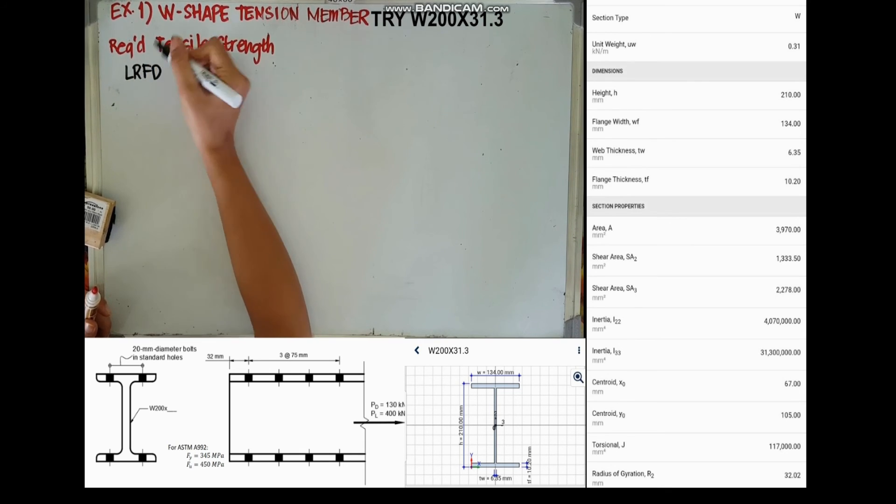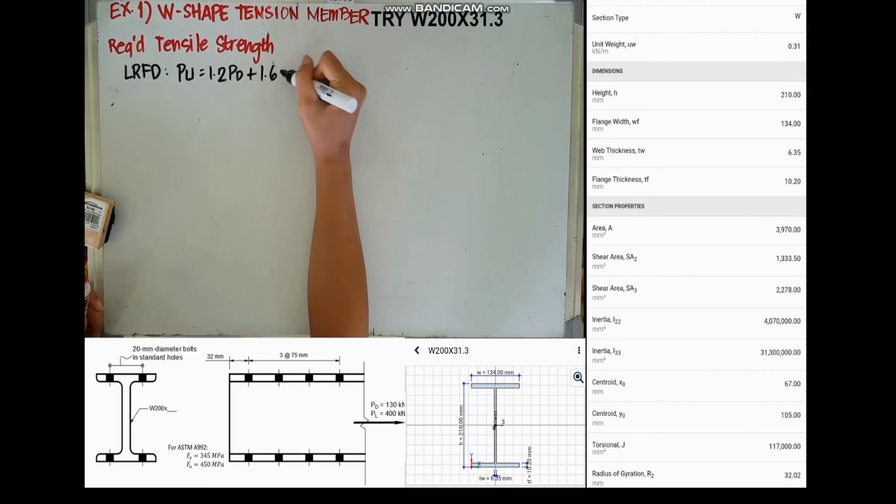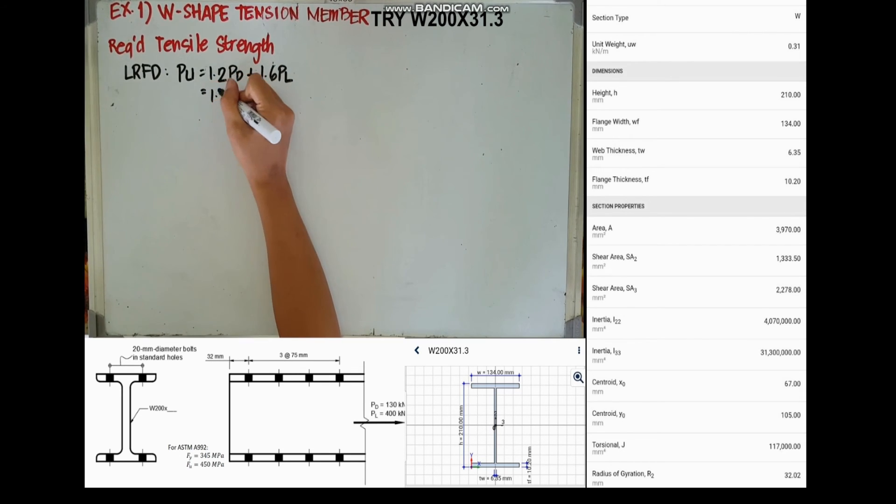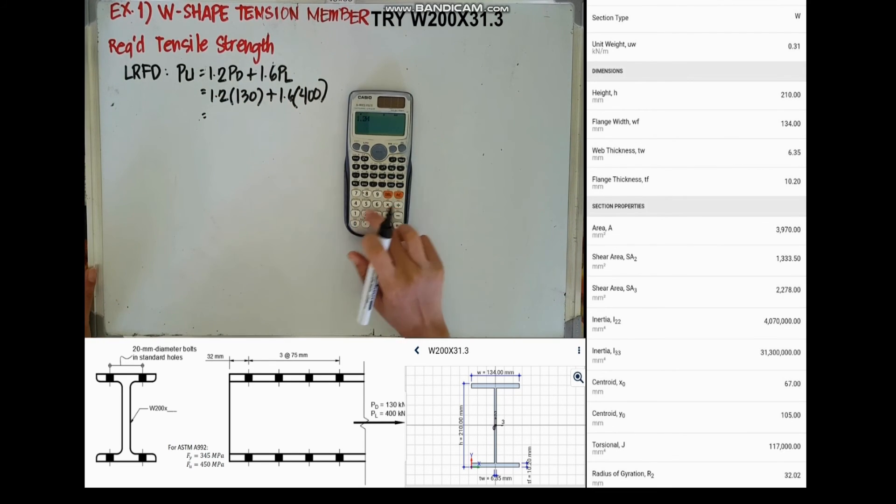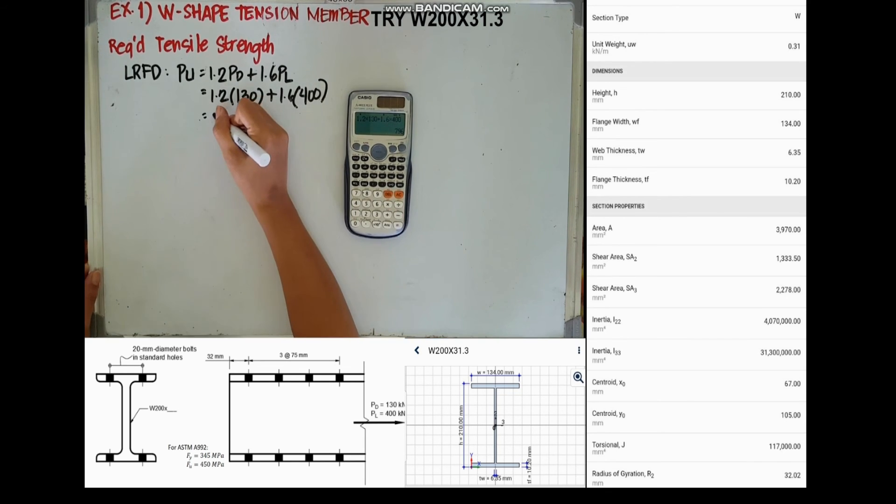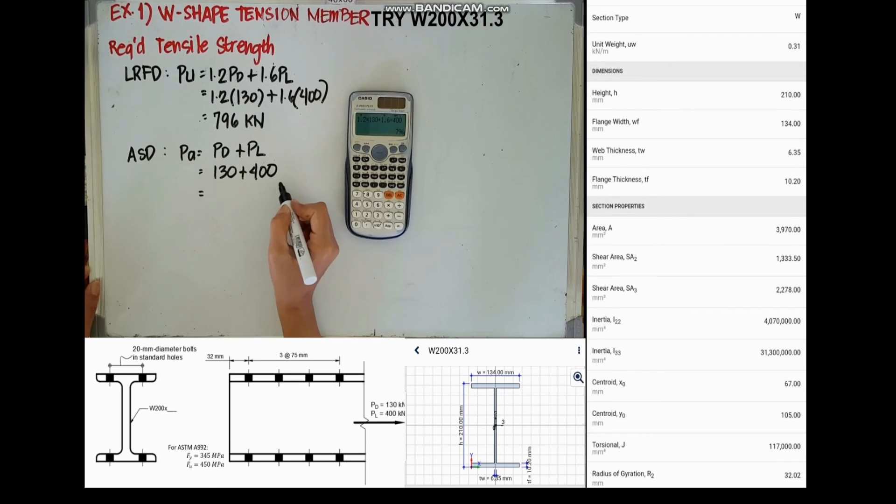For our required tensile strength, our PU is equal to 1.2 dead load plus 1.6 live load. Substituting the values, our tensile strength under LRFD is 796 kN, and for ASD you'll just add the two.